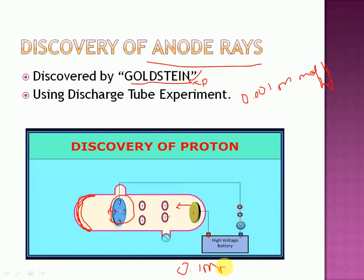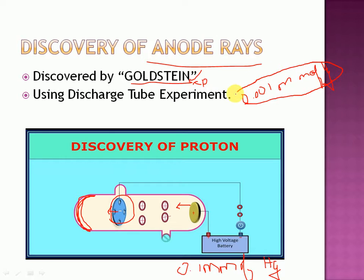And once it hits the fluorescent screen, it will start glowing. Also this time, instead of taking the pressure as 0.01 mm of Hg, he took the pressure as 0.1 mm of Hg. So the pressure was more compared to last time. Therefore the number of gas molecules was more. In the previous case it was near to vacuum, so the number of gas molecules were almost nil. But in this case, the number of gas molecules were more.